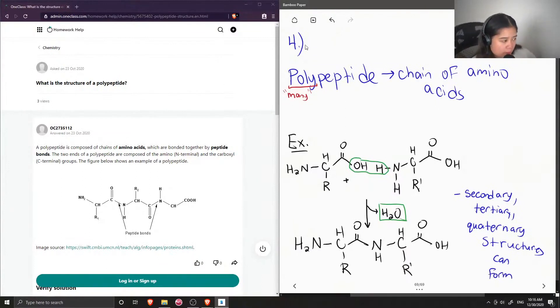So the junior tutor said that a polypeptide is composed of chains of amino acids which are bonded together by peptide bonds. So they showed where the peptide bonds are located. I'll label it on mine as well, so this is an example of the peptide bond.